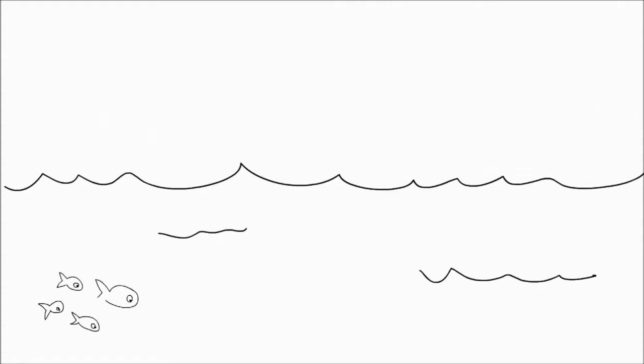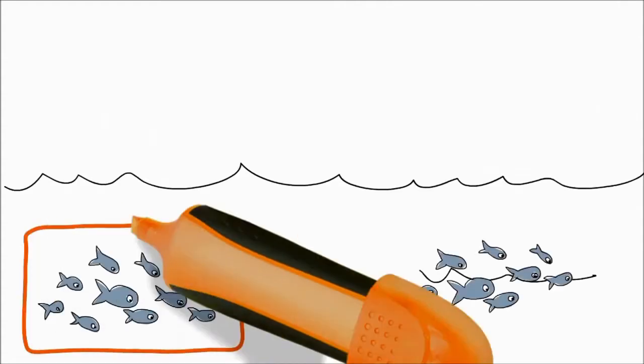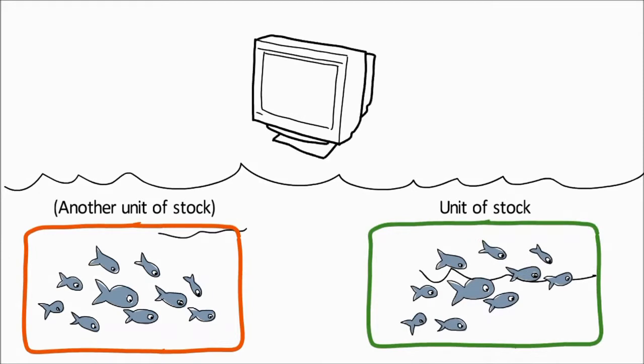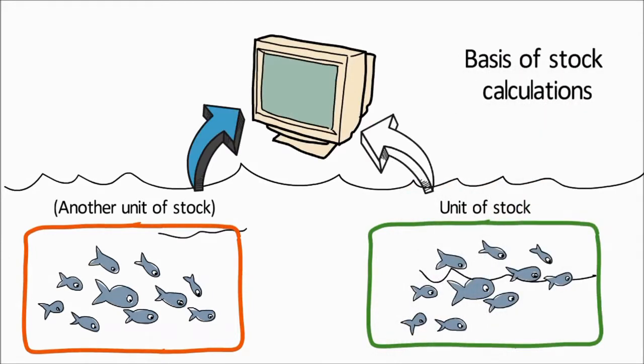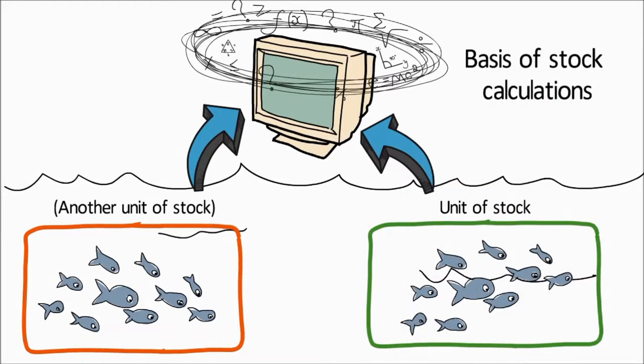In order to assess the status of fish populations, the species are first divided into discrete units called stocks which are then used as the basis of stock assessment calculations.